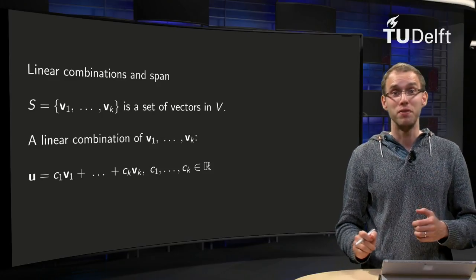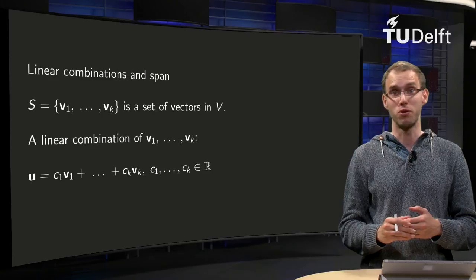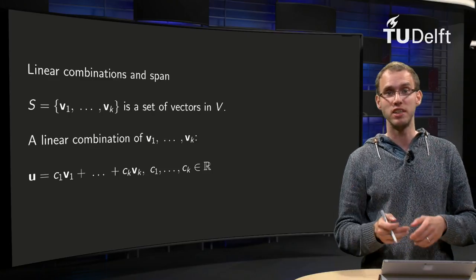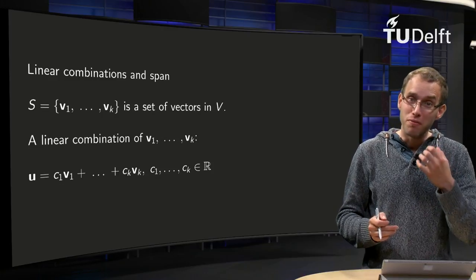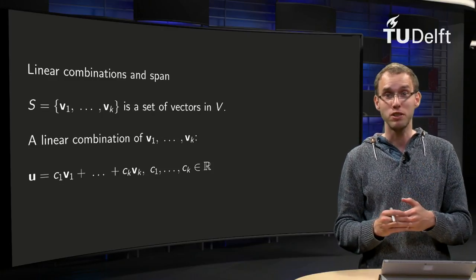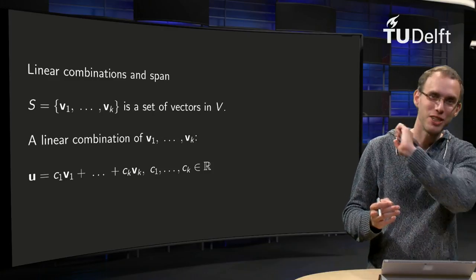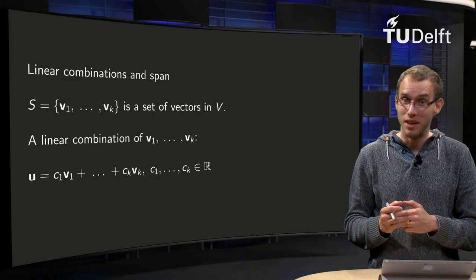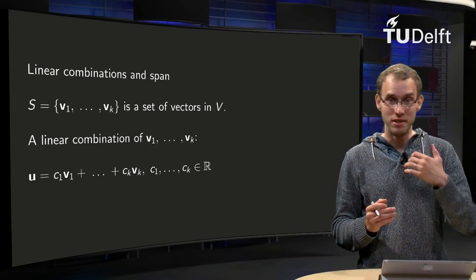For vectors in R^n, we have introduced a number of very useful concepts like linear combinations, span, independence, and basis. It would be very nice if we can introduce similar concepts in general vector spaces. Can we do that? Yes, we can. I will start with the generalization of the concept of linear combinations and span in this video.